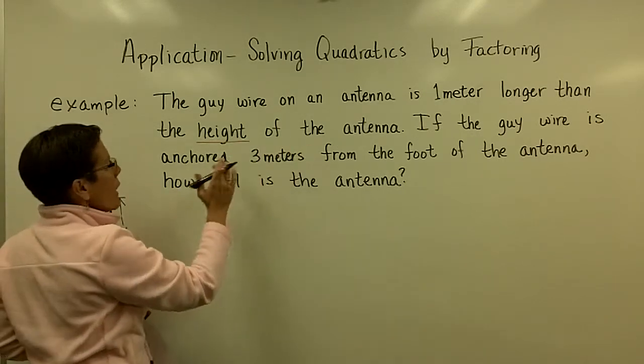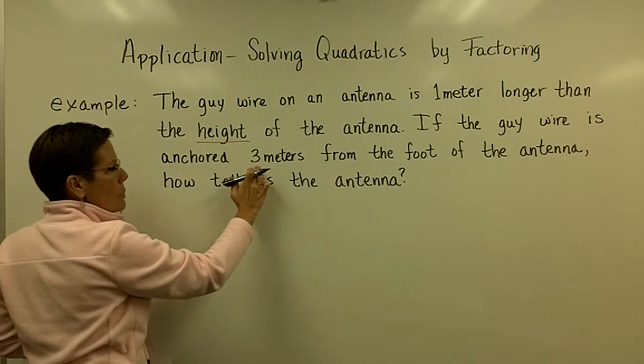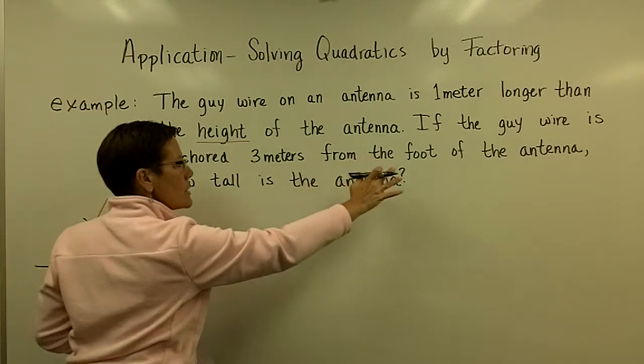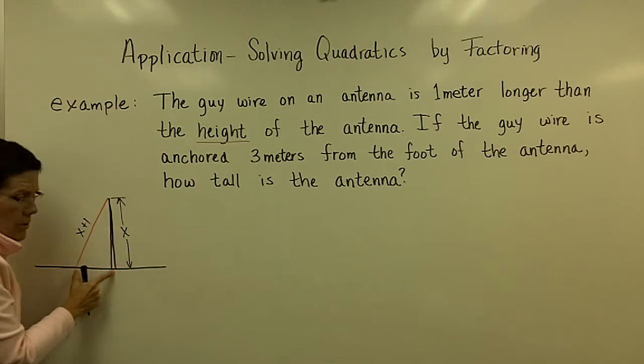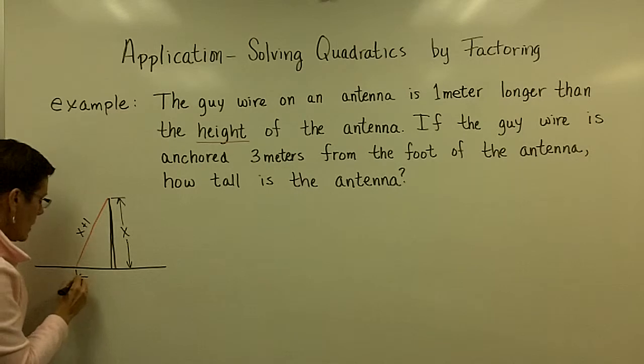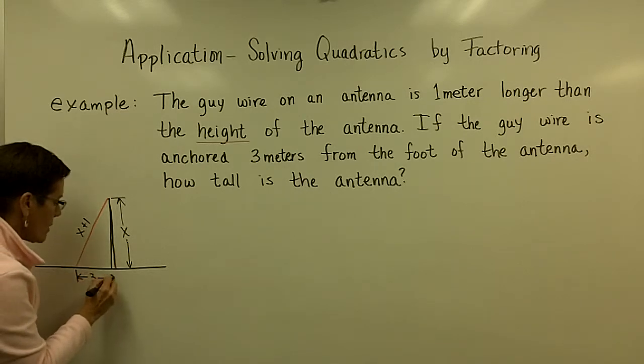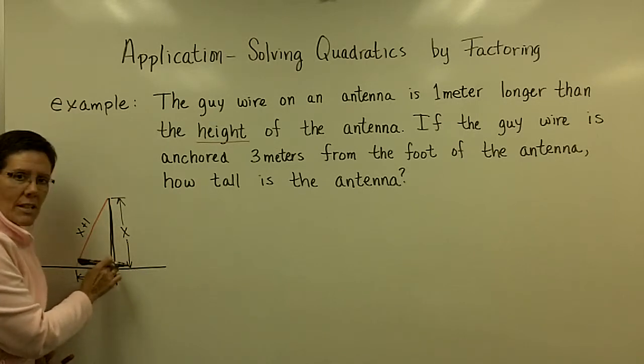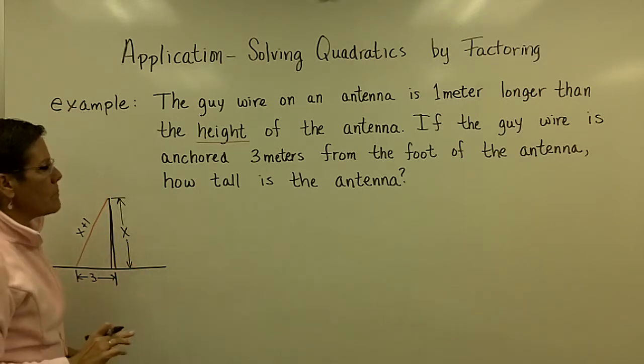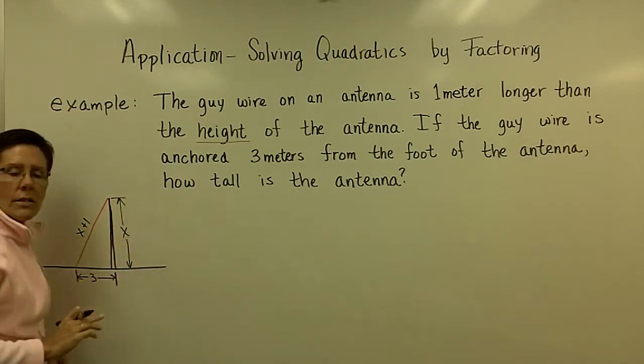If the guy wire is anchored three meters from the foot of the antenna. Here's the foot of the antenna. And it's anchored over here. So it's anchored three meters from, I've left my units off here, from the foot of that antenna, pretending that the thickness of the base is negligible. How tall is this?